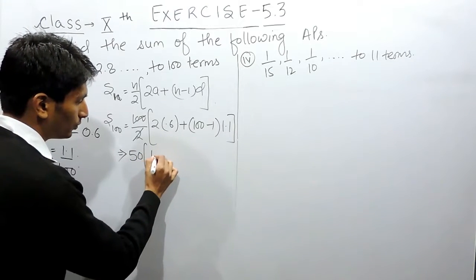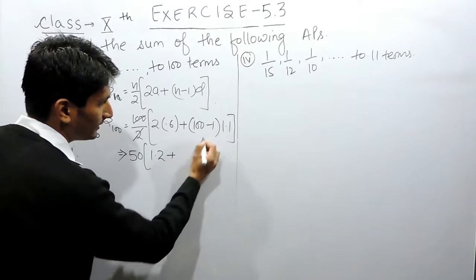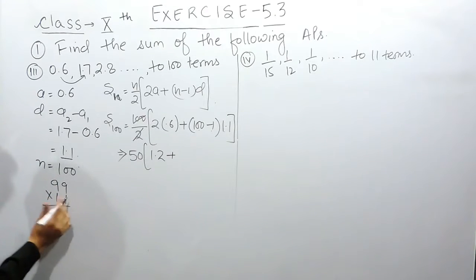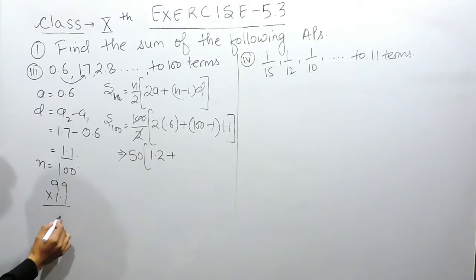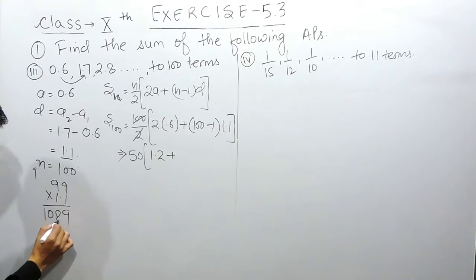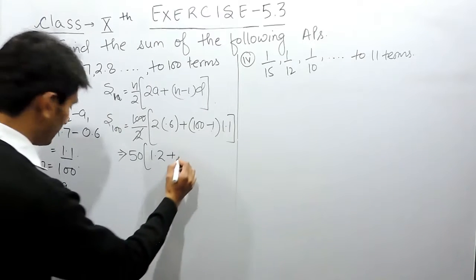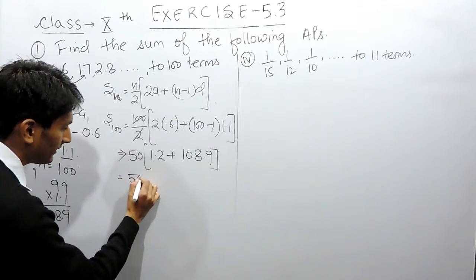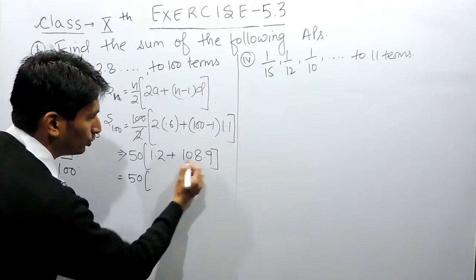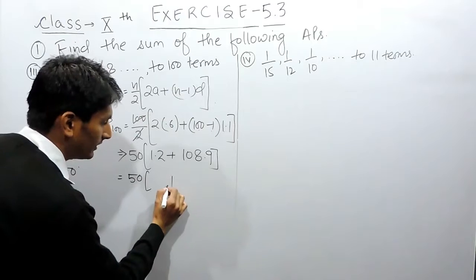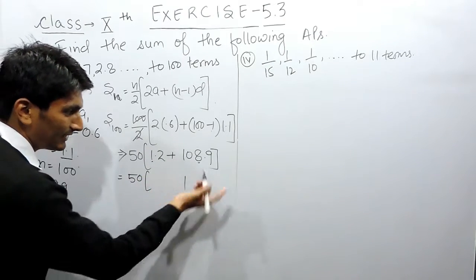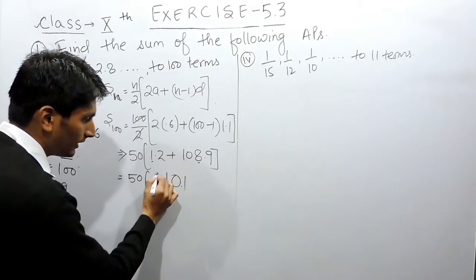This will become 2 times 0.6 which is 1.2, and 99 multiplied by 1.1. Considering 1.1 as 11, so 11 into 99: 11 into 9 is 99, carry 9, and 11 into 9 is again 99 plus 9 is 108, and there is 1 decimal place after that. So this will become 108.9.